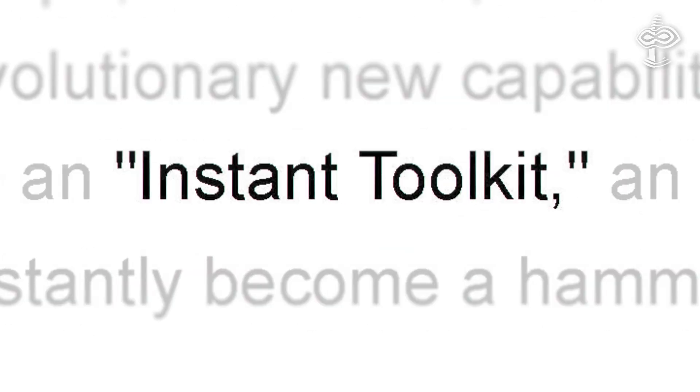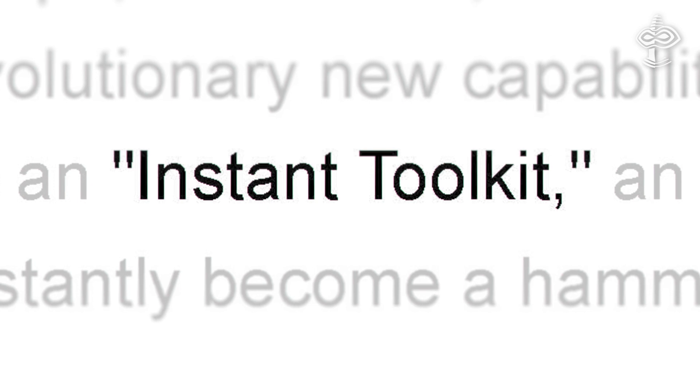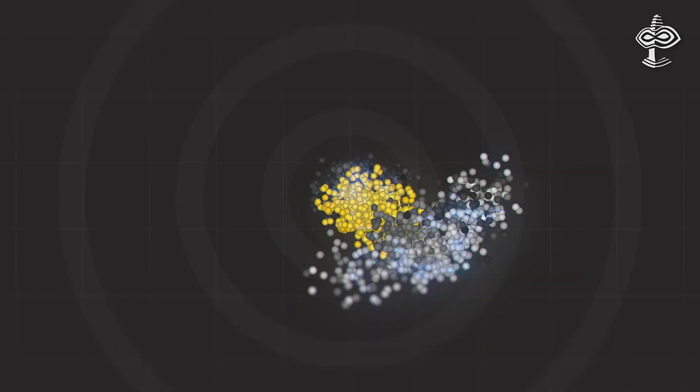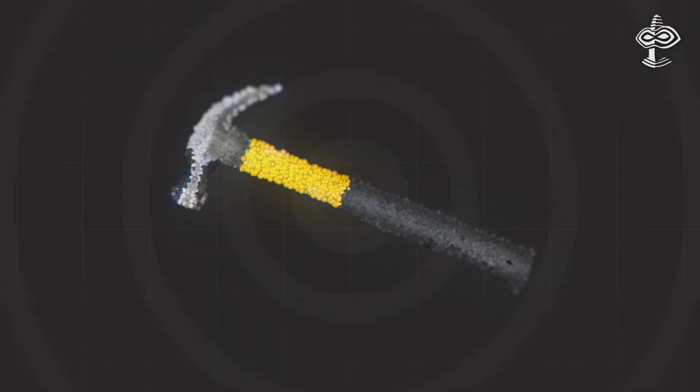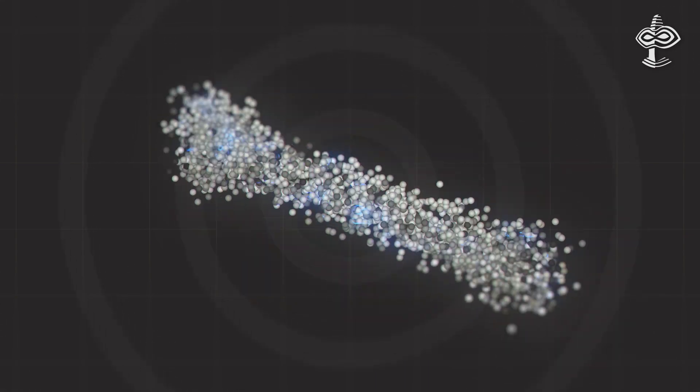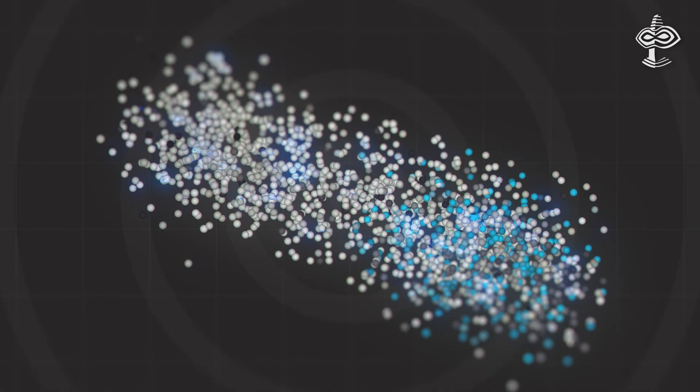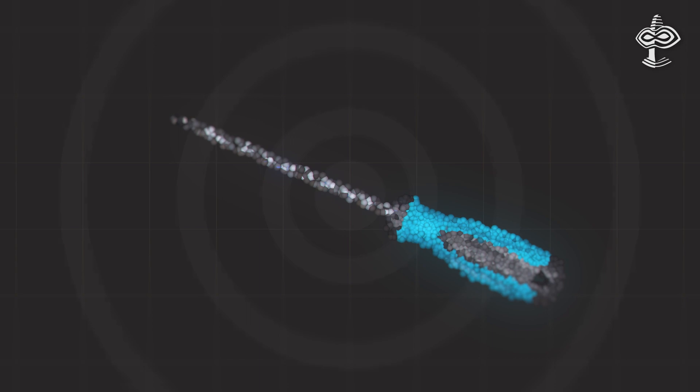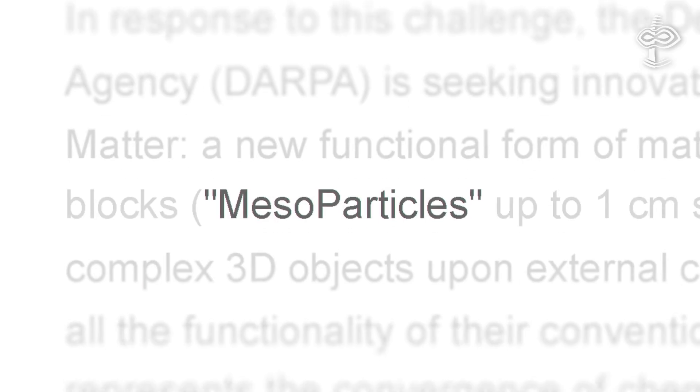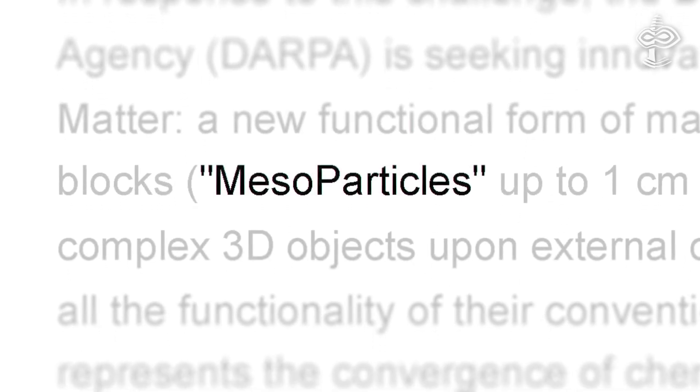A simple example would be an instant toolkit, an amorphous material that can be programmed to instantly become a hammer, wrench, or screwdriver on demand, and then return to its initial form so it can be reused. They are called the basic element mesoparticle and that, in principle, separability can be exploited to create dynamic materials of unprecedented complexity and capability.